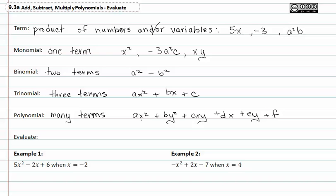This one for example has one, two, three, four, five, six terms in it. To evaluate a polynomial, we replace the variable with a value.